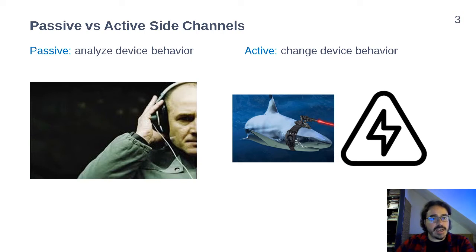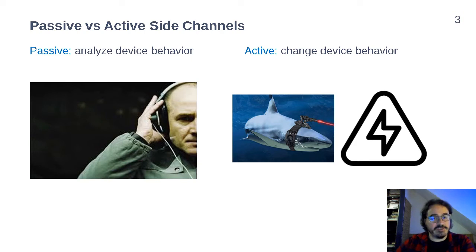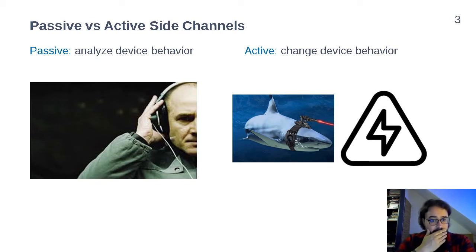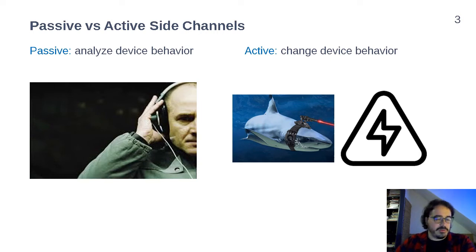There are two kinds of side channels: passive and active. The passive case is if we essentially eavesdrop on what the device does. It could be done via power consumption, electromagnetic emanation, time, temperature, or light — there are multiple ways. The main thing is the device behavior stays unaltered. For example, we have a device performing AES and we measure power consumption during those AES executions. That's the side channel.